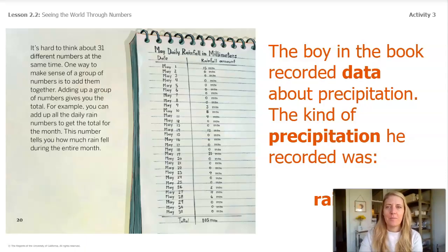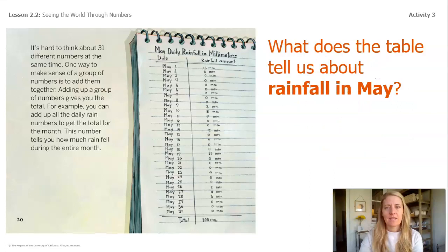Now, the boy in the book recorded data about precipitation. The kind of precipitation he recorded was rainfall. Let's think back. Remember, the boy in the book recorded data about precipitation, specifically rainfall. But what does the data table tell us about rainfall in May? Notice the boy did not use a line plot to organize his rainfall data. Instead, he kept a total for every day and then added them all up at the end.